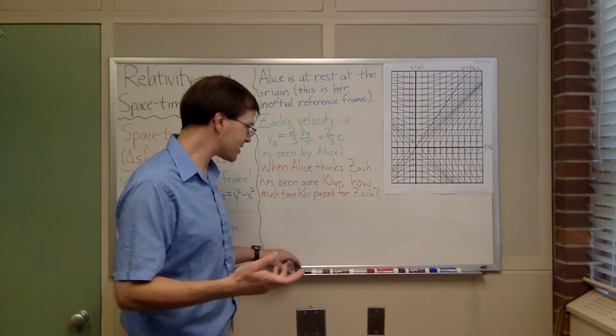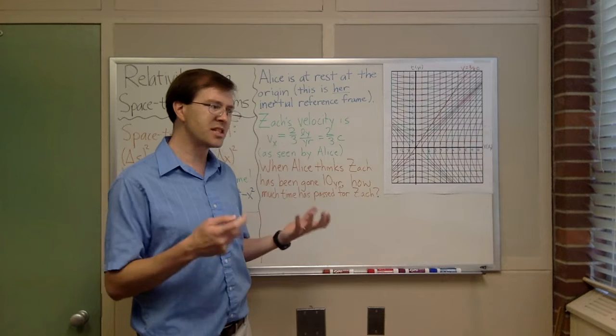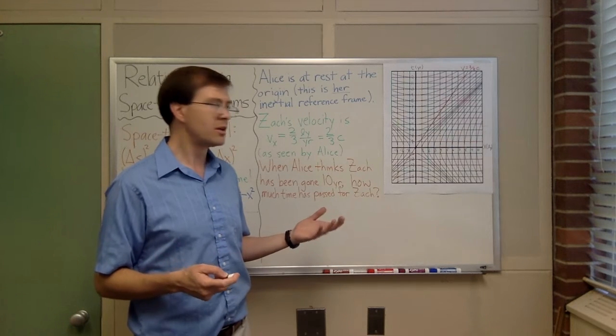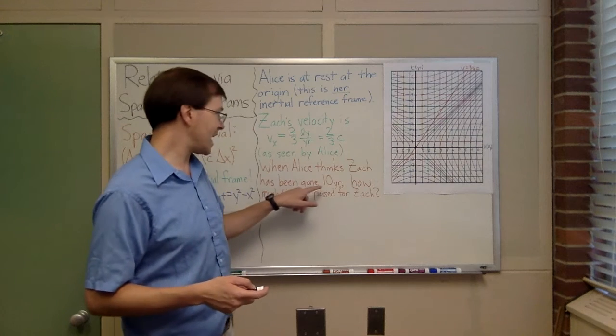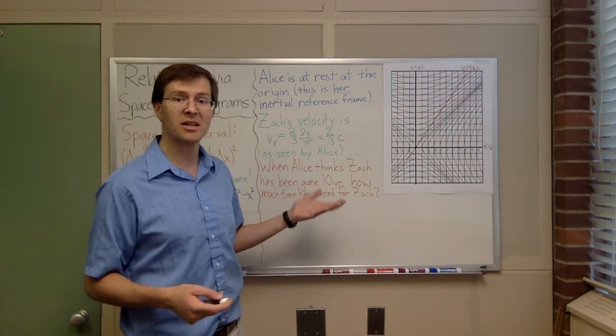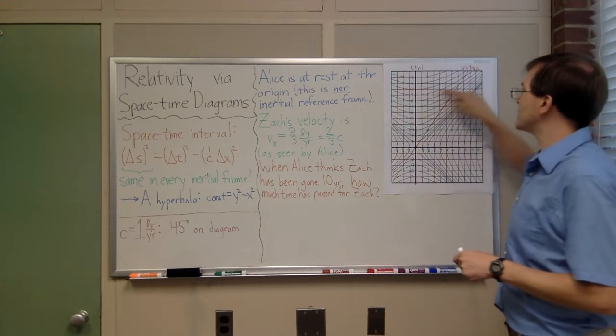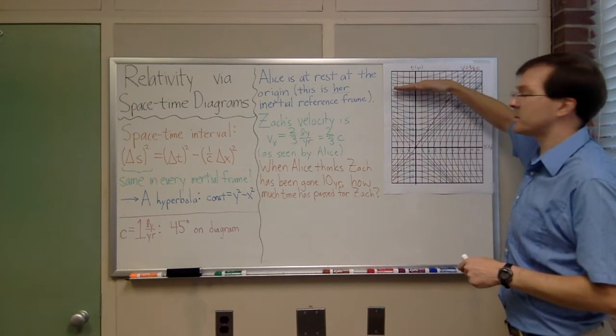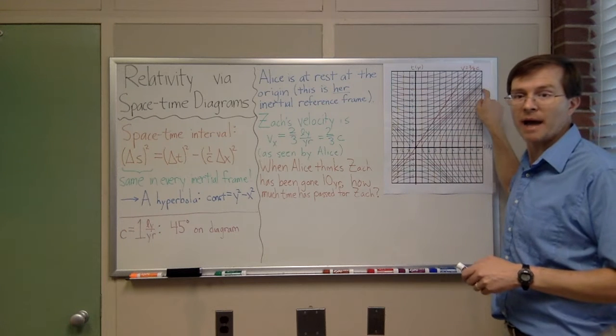For us, when you look at this, we say, we need to have a difference in time between two events. The first event is clearly when Zach passes Alice. And the second event, when Zach has been gone ten years according to Alice, what does that mean? Well, Alice believes that all the events on this line, ten years later from zero, Alice says all these events are ten years after Zach passed by.